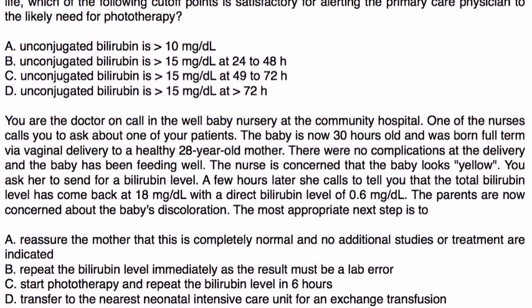And finally, you are the doctor on call in the well baby nursery at the community hospital. One of the nurses calls you to ask about one of your patients. The baby is now 30 hours old and was full term via vaginal delivery to a healthy 28-year-old mother. There are no complications at delivery and the baby has been feeding well. The nurse is concerned that the baby looks yellow. You ask her to send for a bilirubin level. A few hours later, she calls you to tell you that the total bilirubin level has come back at 18 and the direct bilirubin is 0.6. Parents are not concerned about the baby's discoloration. The most appropriate next step is.